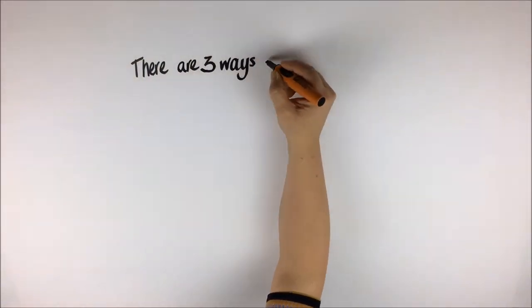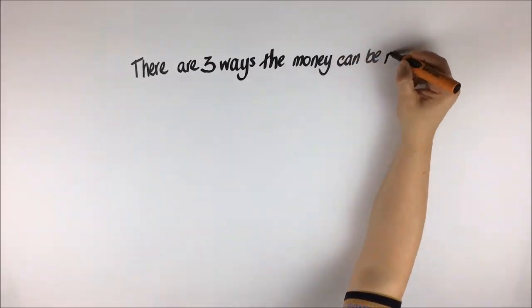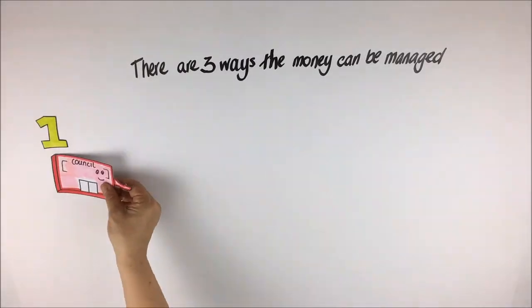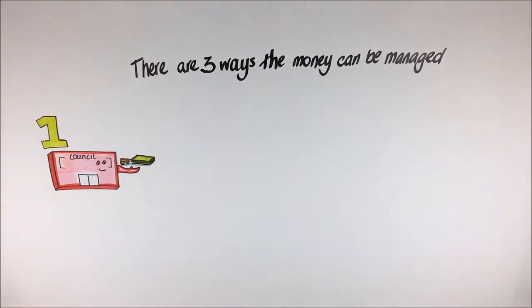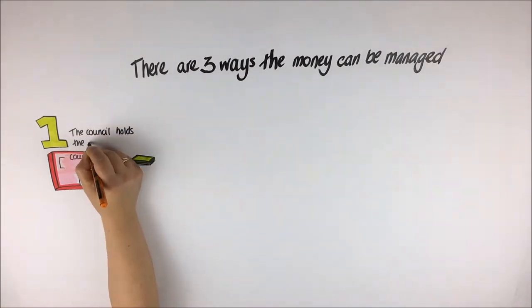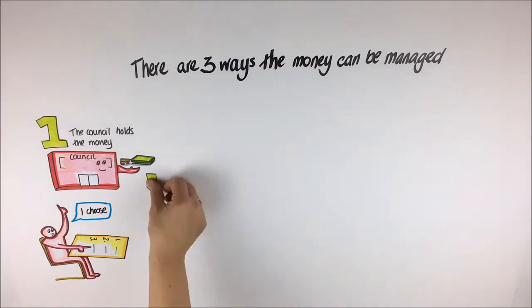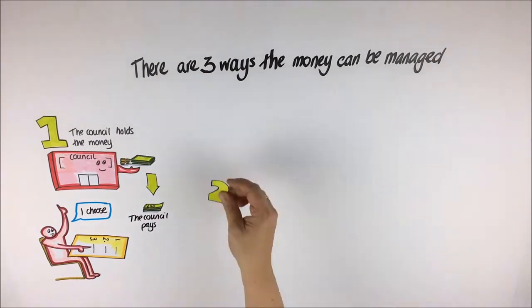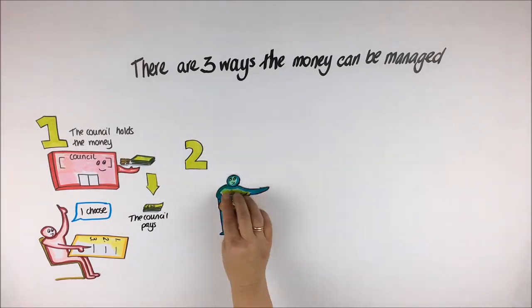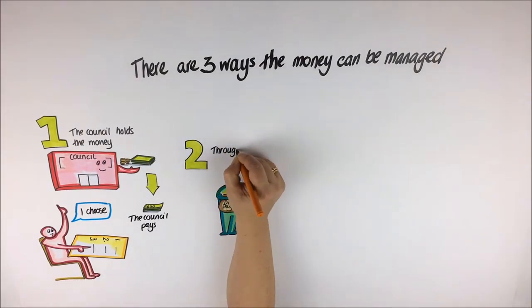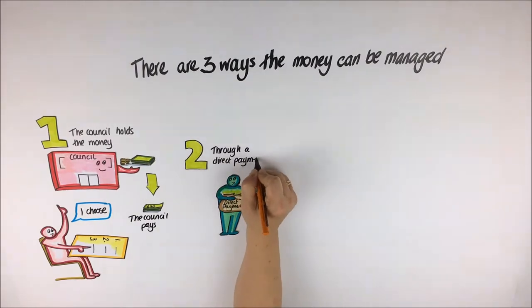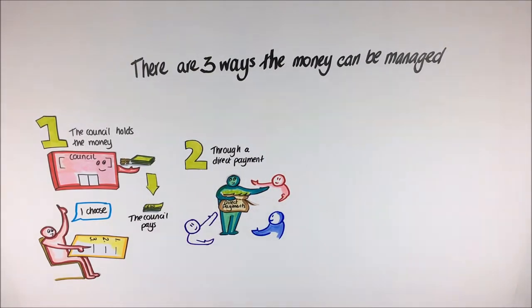There are three ways that the money allocated to you can be managed. Firstly, the council holds the money. You choose what you want to do and the local authority holds the budget and pays for it. Secondly, through a direct payment where the person holds the money. You choose what you want to do and hold the money to pay for it yourself.